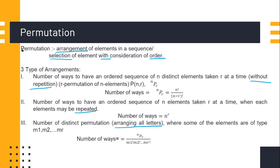This is represented as nPr, which has the value of n factorial divided by (n minus r) factorial. The second type is the number of ways to have an ordered sequence of n elements taken r at a time where any particular item may be repeated — meaning each element may be repeated.